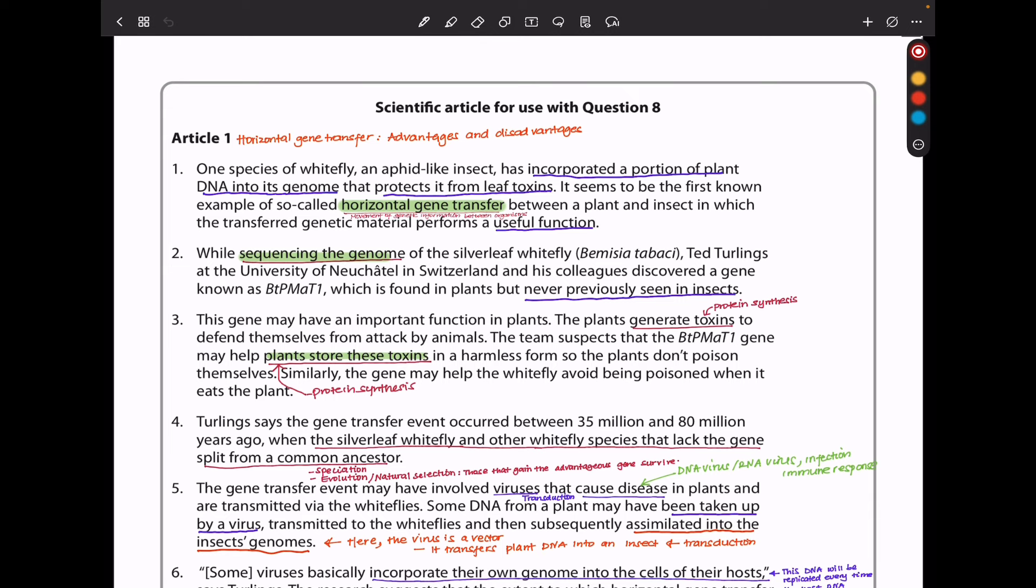They say one species of whitefly, an aphid-like insect, has incorporated a portion of plant DNA into its genome that protects it from leaf toxins. It seems to be the first known example of so-called horizontal gene transfer between a plant and insect in which the transferred genetic material performs a useful function.